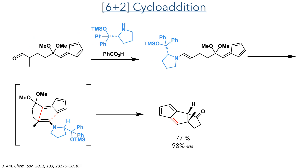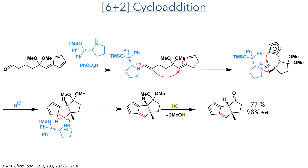With the aldehyde installed, the molecule was then primed to take part in the critical 6+2 cycloaddition. This uses a chiral pyrrolidine catalyst and benzoic acid to first produce an enamine. This enamine can then take part in the 6+2 cycloaddition, forming the tricyclic product in a 77% yield with 98% ee. Computational studies into the mechanism suggest that this bond formation is not concerted, and instead follows an asynchronous stepwise pathway.